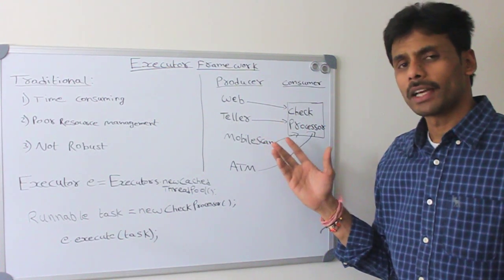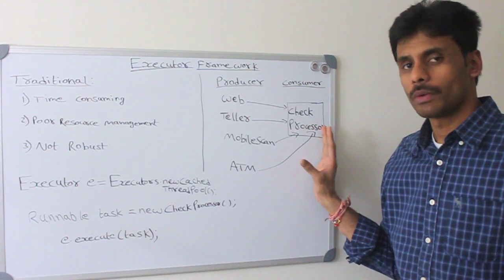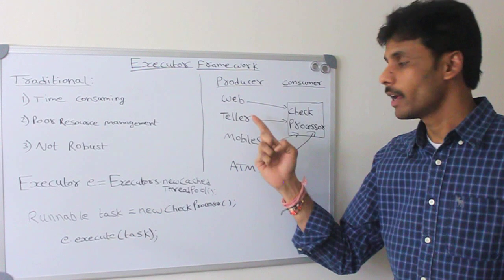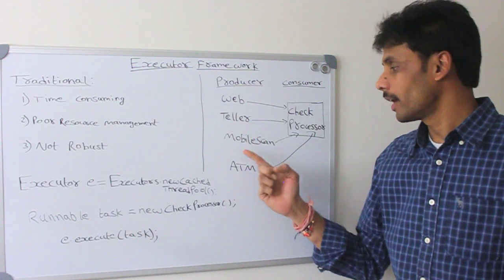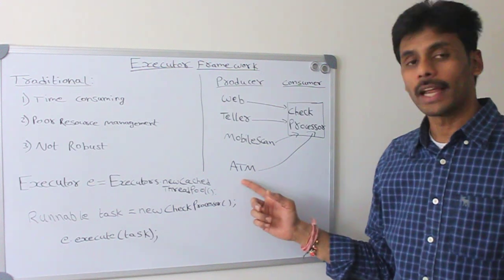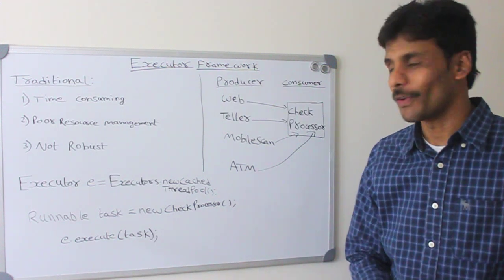Here I have a banking application which is a check processor which can receive checks from various channels. It could be internet banking, a teller machine at a bank, a mobile scan where a customer can take a picture of his check and then send it across, and then an ATM.